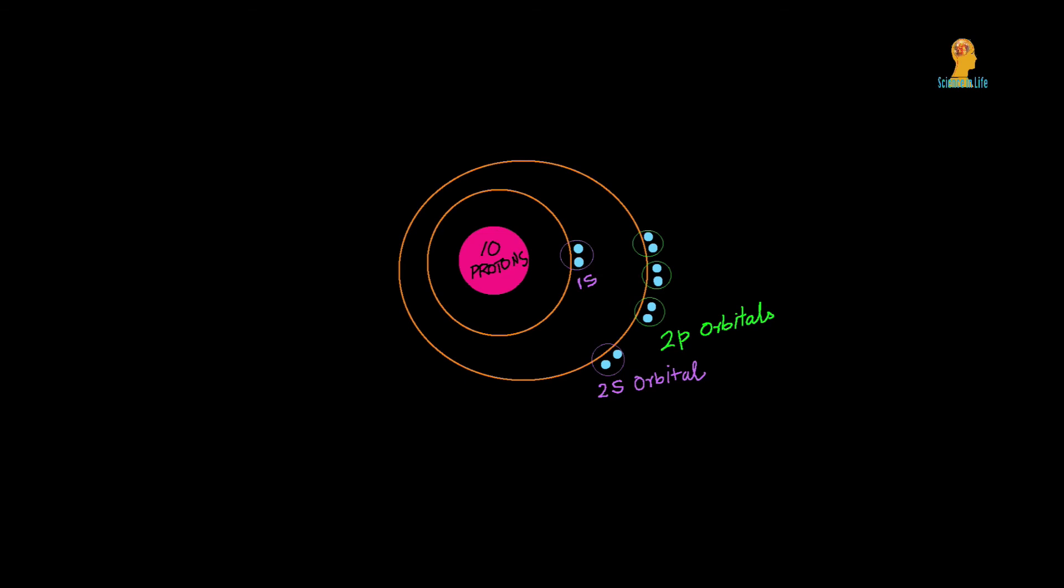In the neon atom, the outer shell is completed with all paired electrons. Since there are no unpaired electrons, neon in its atomic state is happy, unreactive towards other elements, and can exist alone.